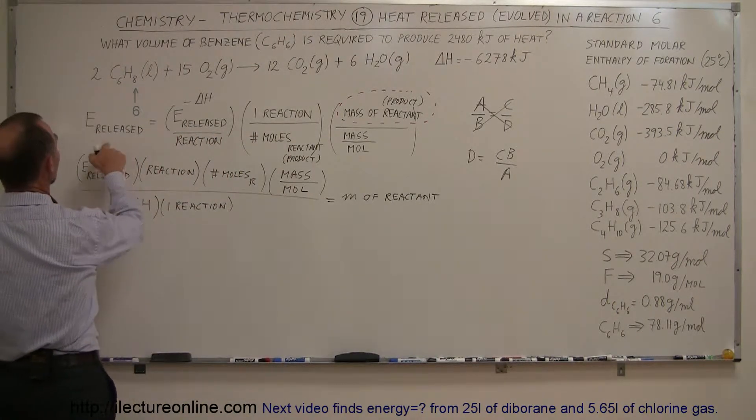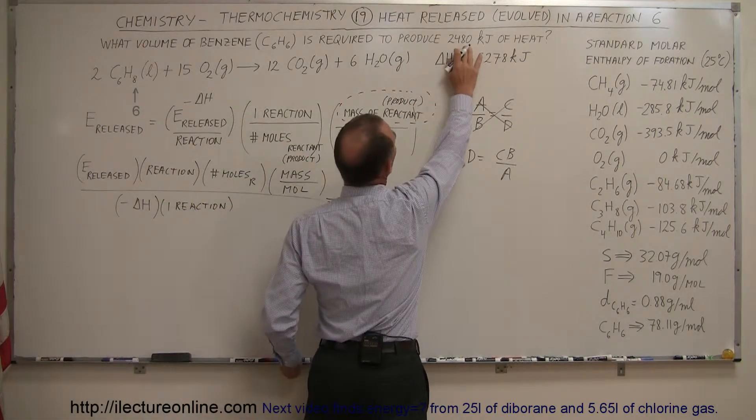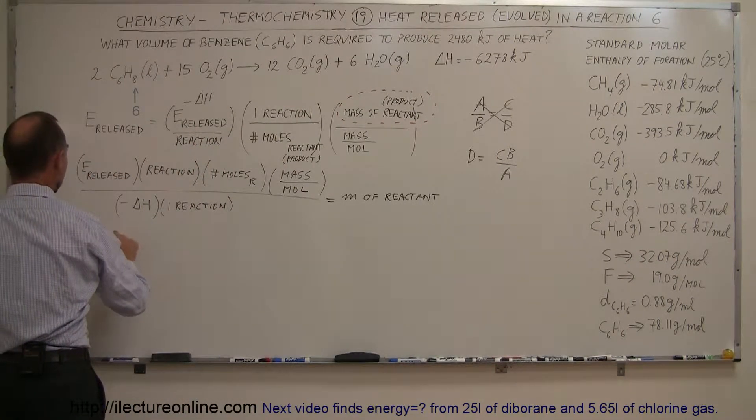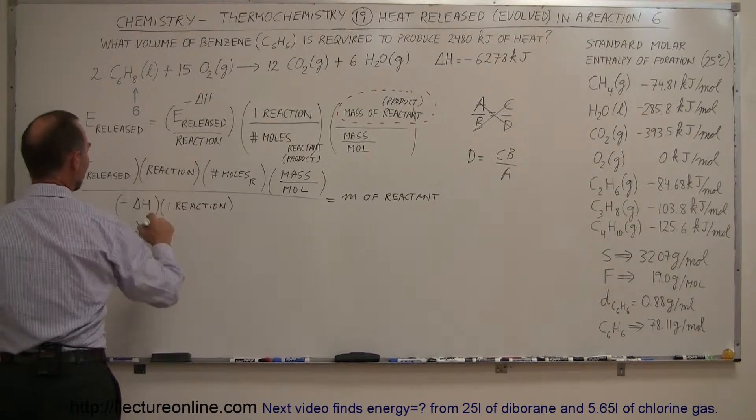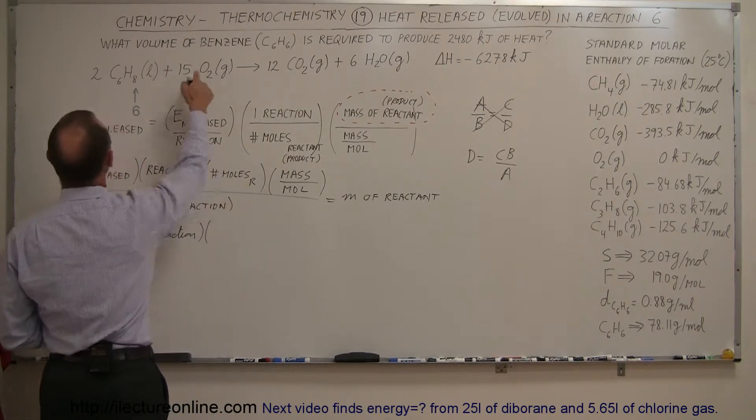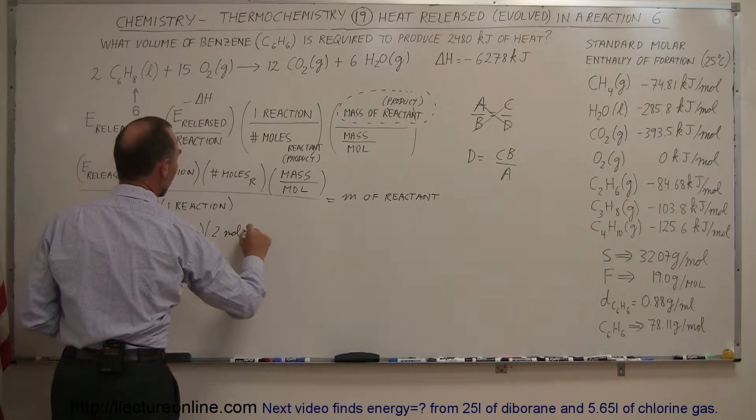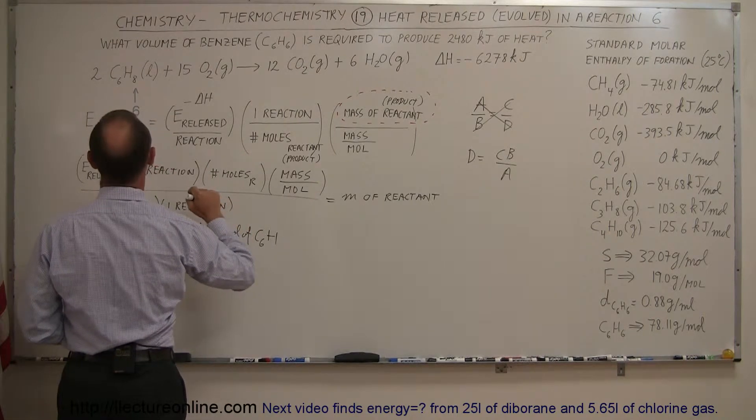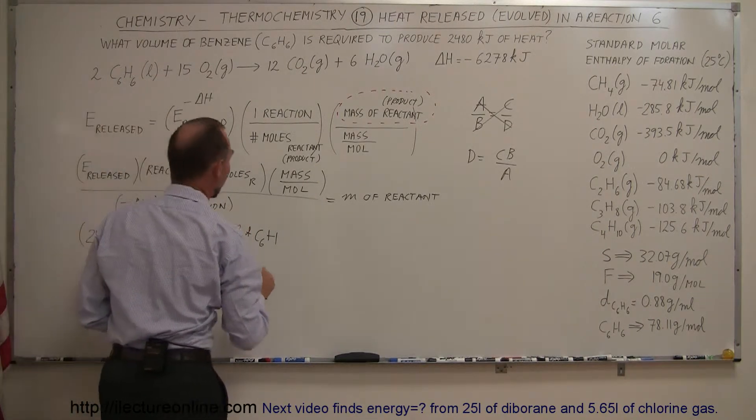So the energy released, that's this one right here, we are given that. We're producing this much energy, so that's 2,480 kilojoules, so 2,480 kilojoules of energy times one reaction times the number of moles of the reactant. So let's see here, we have two moles of reactant, so we put two moles of C6H6.